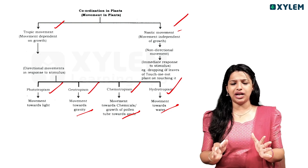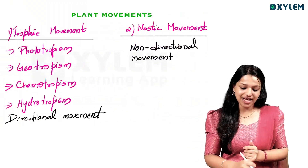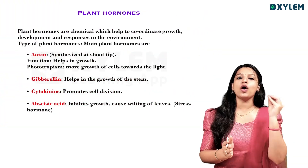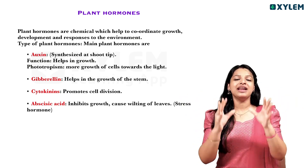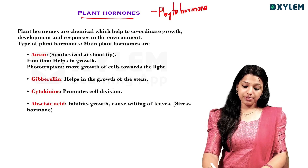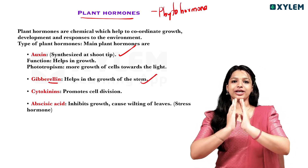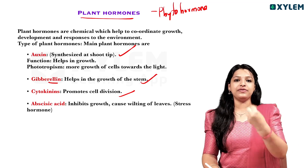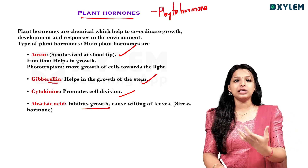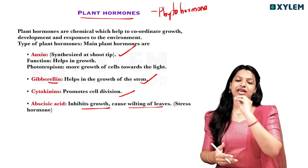Nastic movement: the Mimosa plant is a very important example of nastic movement. Plant hormones include auxin — found at the shoot tip and involved in phototropism. Gibberellin promotes growth and stem elongation. Cytokinin promotes cell division and cell differentiation. Abscisic acid is an inhibitory hormone involved in the wilting of leaves.